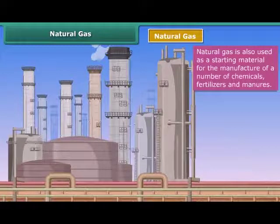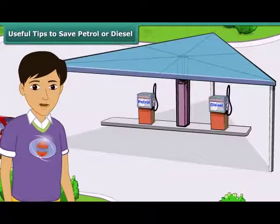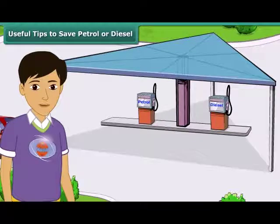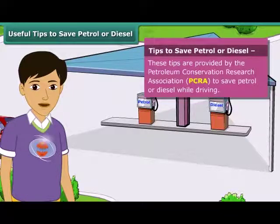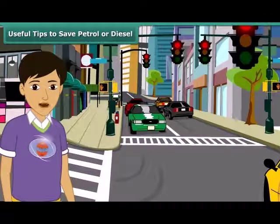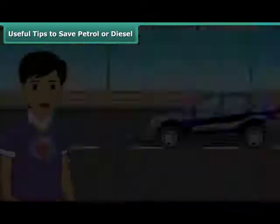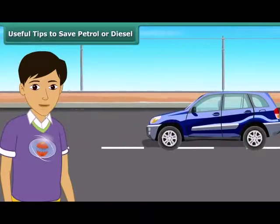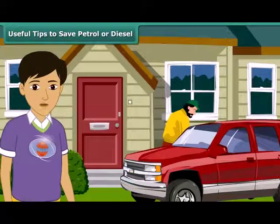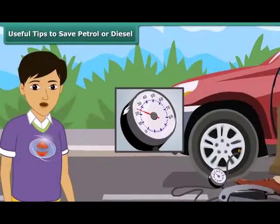As we know, petrol and diesel are exhaustible resources — the amount of them in nature is limited and will deplete one day. It is important to use these resources carefully. Here are a few useful tips as advised by the Petroleum Conservation Research Association (PCRA): one, switch off the engine at traffic lights or traffic jams; two, drive at a constant and moderate speed as far as possible; three, ensure regular maintenance of the vehicle and correct air pressure in tires.